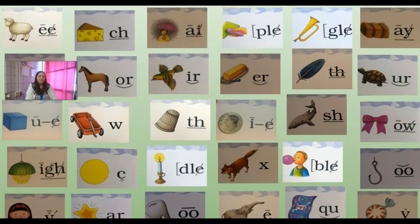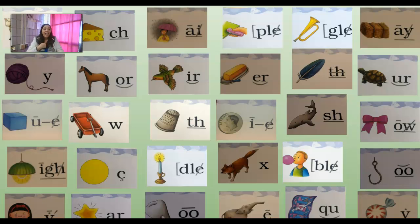All right, and we are going to work on our sound cards. Are you ready? Okay, so we have sheep E digraph EE, cheese ch digraph CH, very good. Rain A digraph AI, lots of digraphs in a row. Then we have staple pull final syllable PLE, bugle gull final syllable GLE, hay A digraph AY, yarn Y Y, horse or combination OR.